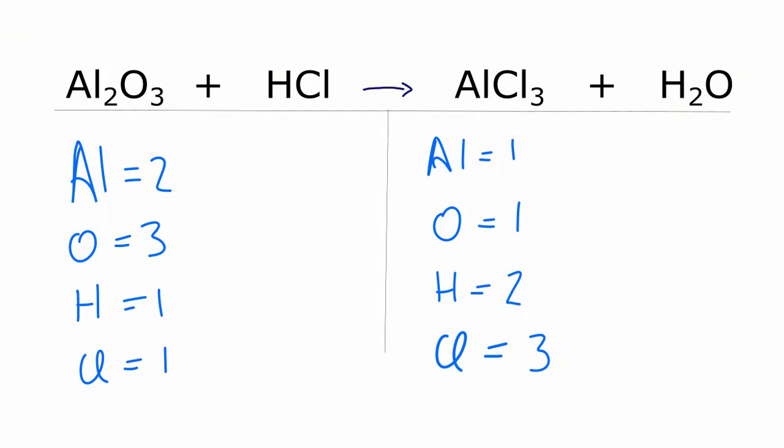I've written down the number of atoms on each side of the equation, so let's see how we can balance this. Usually I do leave the oxygens to last, but I see right here I have an odd number, and I think if I can get that to an even number, that'll make the balancing a lot easier.